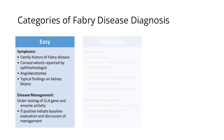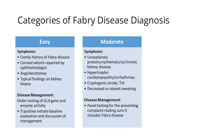The moderate cases are people who have significant health problems that are highly associated with Fabry disease. That would include things like hypertrophic cardiomyopathy, early onset proteinuria, and possibly unexplained lymphedema, especially if it's accompanied by neuropathic pain in the hands and feet. These are findings that are very common in Fabry disease but not very common in the general population, though they do have other causes.